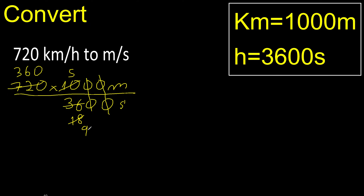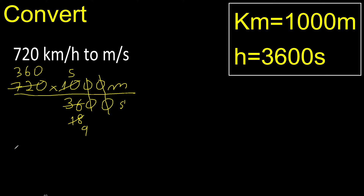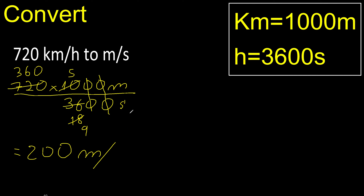360 can be divided by 9. Divided by 9 is 40. 40 multiplied by 5 is 200. Finish.